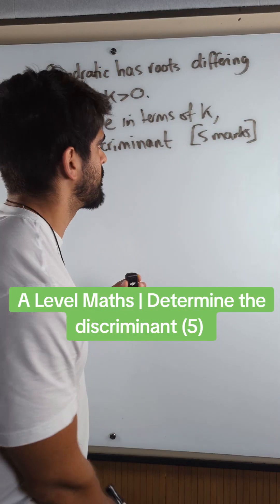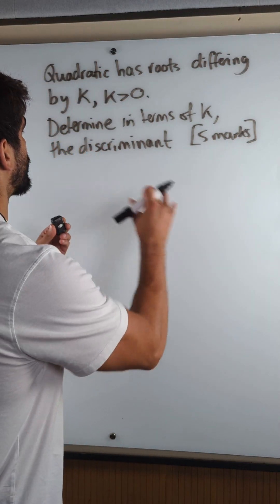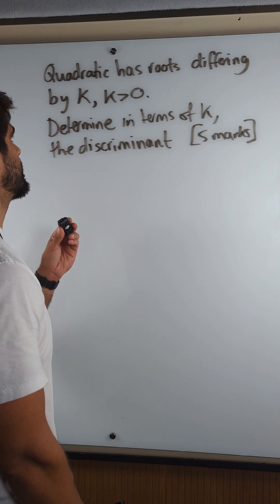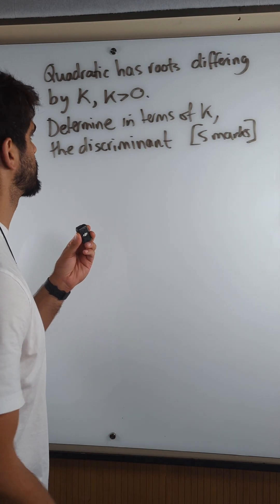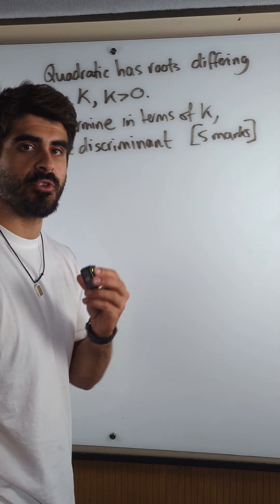Yes, mate. Cheeky five mark question. A quadratic has roots differing by k, k is bigger than zero. Determine in terms of k the discriminant of the quadratic.